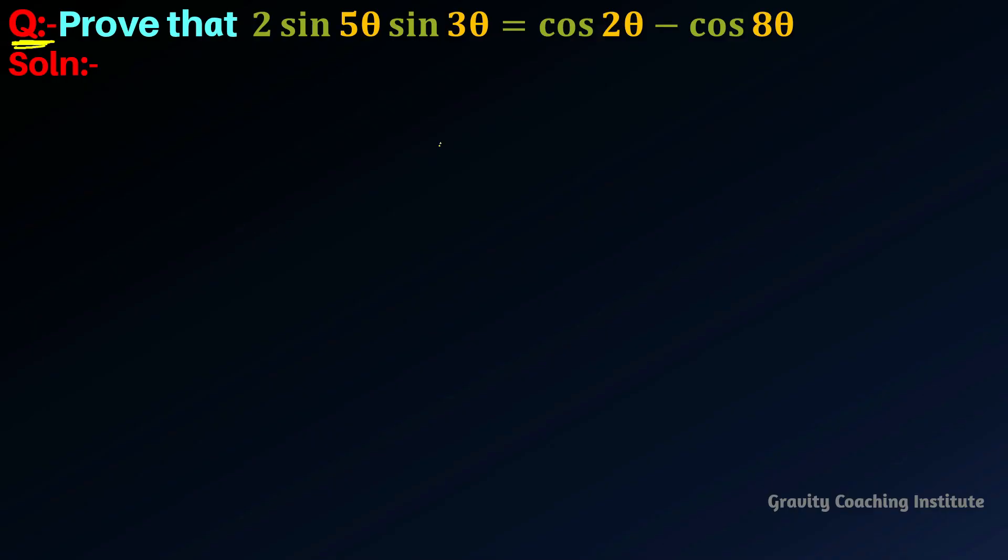Question: Prove that 2 sin 5θ sin 3θ = cos 2θ - cos 8θ. To solve this question, we'll prove it in different ways. First method.